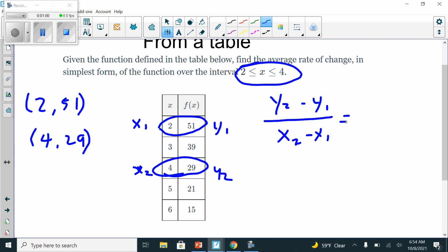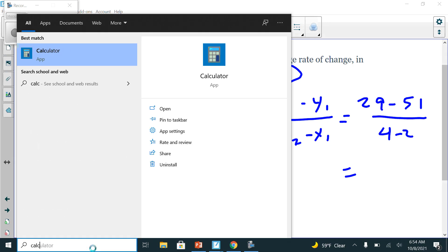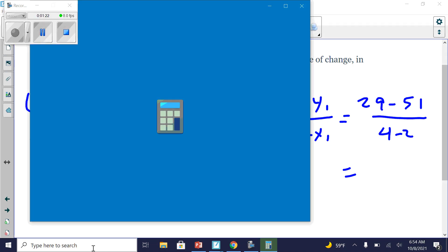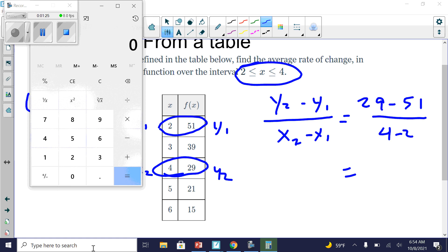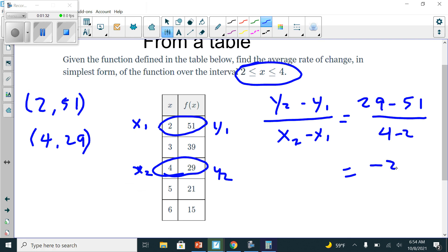So y2 is 29, so I'm going to put 29. y1 is 51, so I'm going to put 51. And then on the bottom I'm going to have x2, which is 4, and minus x1, which is 2. So now all you're going to do is you're going to go ahead and substitute calculations. So I'm going to go to my calculator app and I'm going to need to subtract 29 minus 51, and I get negative 22. So I'm going to have negative 22 divided by, and 4 minus 2 is 2.